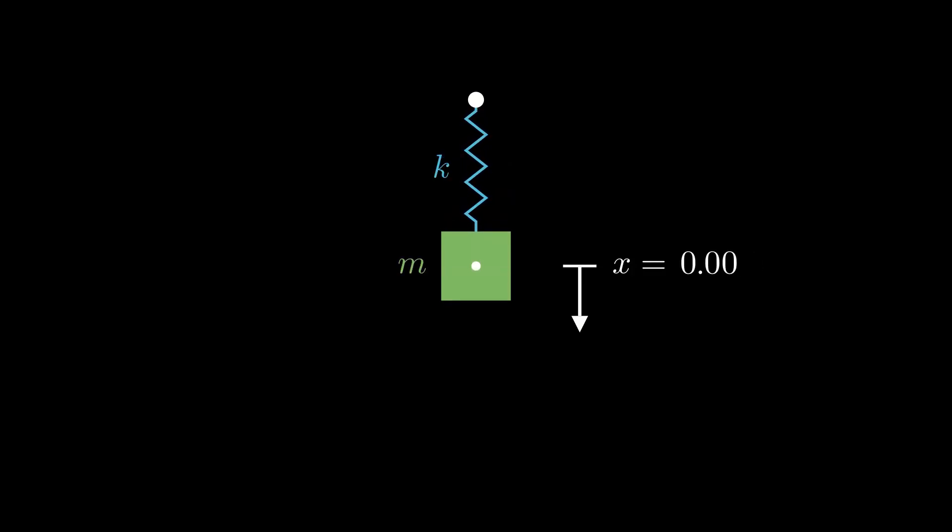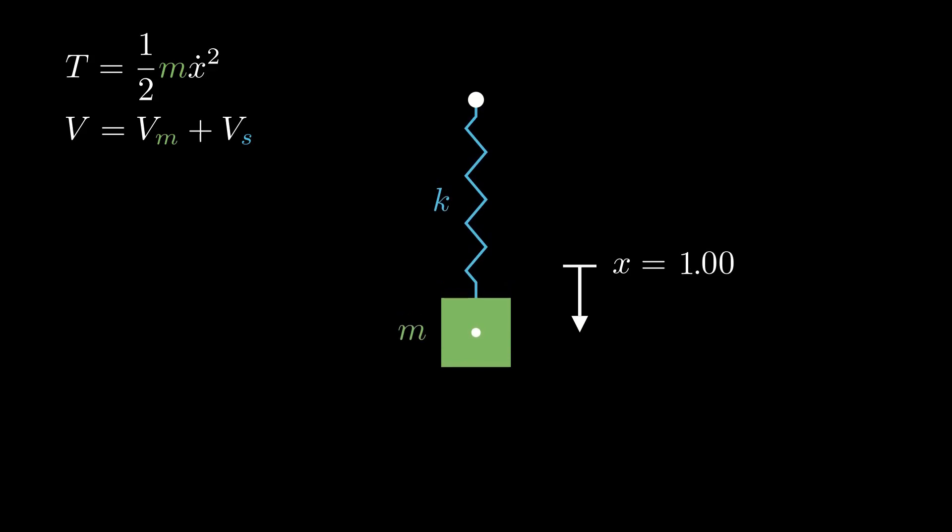The kinetic energy of the system is simply one half m x dot squared. The potential energy has two components, one for the mass and one for the spring. As x increases, the potential energy of the mass decreases, which is why we have V equals negative m g x. The potential energy of the spring is given by Hooke's law, with V equals one half k x squared.